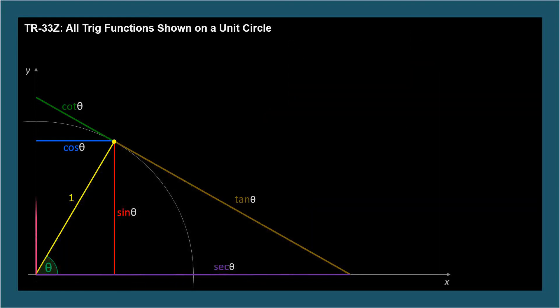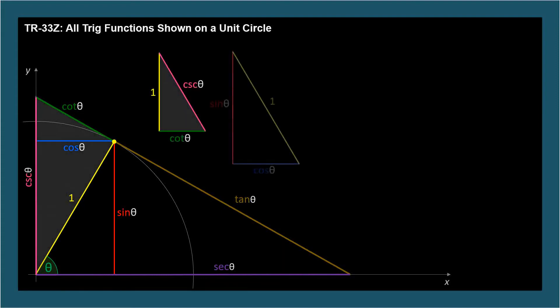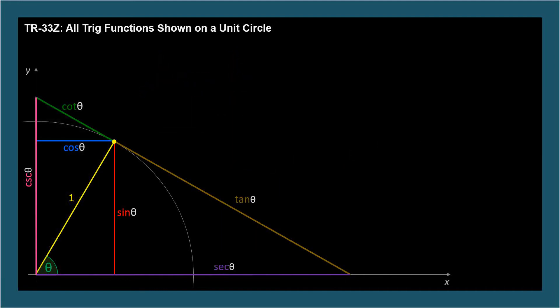Finally, this pink segment along the y-axis has a length corresponding to cosecant. The similar triangle ratios are 1 over sine, which is cosecant. So there are all six trig functions represented graphically on a unit circle.